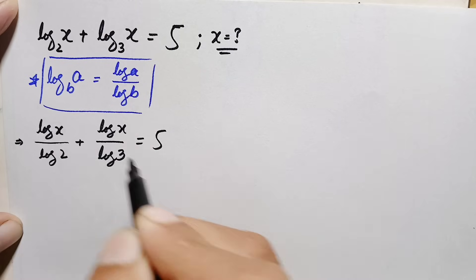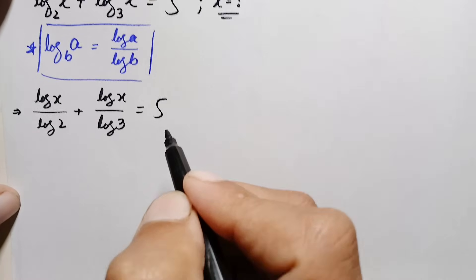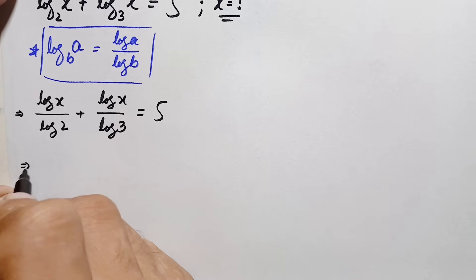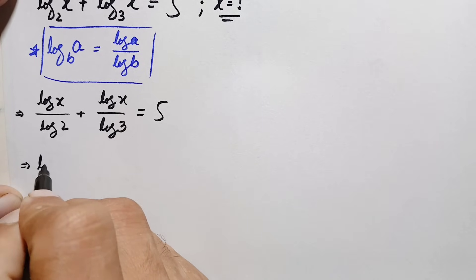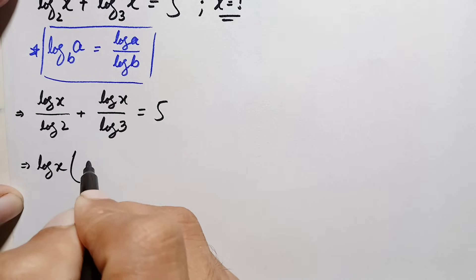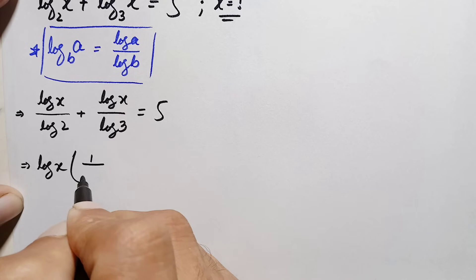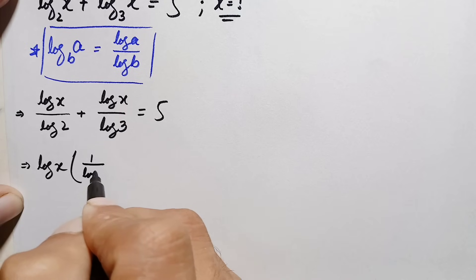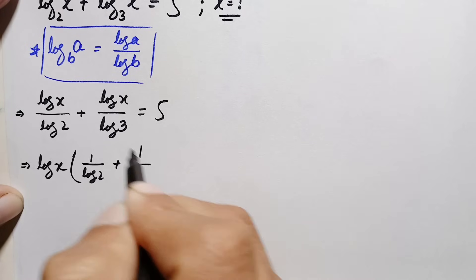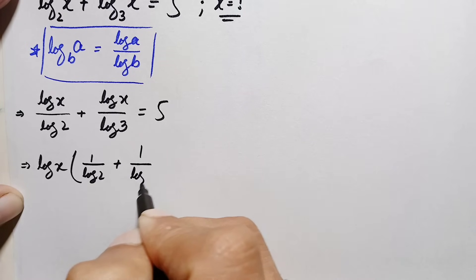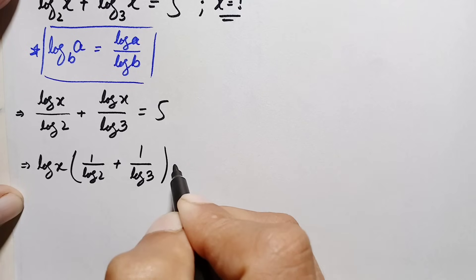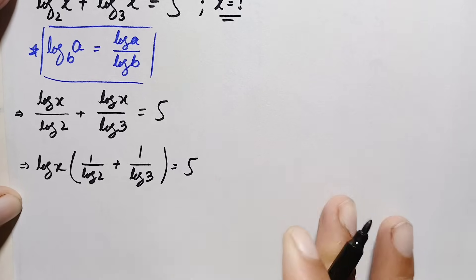There is log x common in the left hand side, so we will take out log of x as a common factor. This becomes: log of x times (1 divided by log of 2 plus 1 divided by log of 3) is equal to 5.